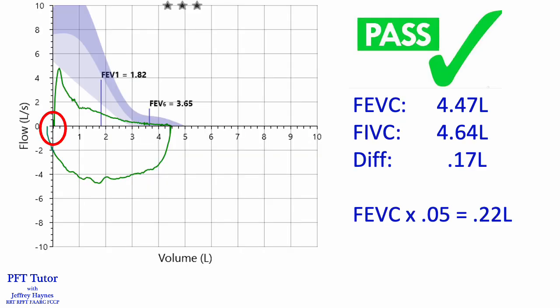Here's a real-life example. The forced expiratory vital capacity is 4.47 liters, and the forced inspiratory vital capacity is 4.64 liters, a difference of 170 mLs. But because 5% of the vital capacity is 220 mLs, the 170 mL gap is considered acceptable.